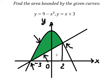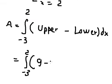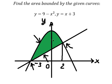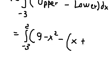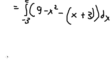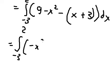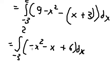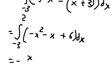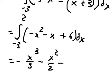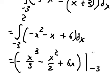The upper function is 9 minus x squared, and the lower function is x plus 3. So we have negative x squared minus x plus 6. The antiderivative of x squared is x squared over 2, and the antiderivative of x is x squared over 2, and we have 6x. Then we put the bounds from negative 3 to positive 2.